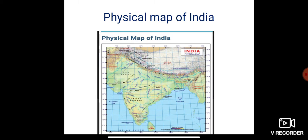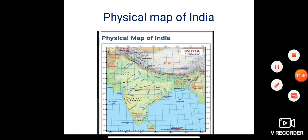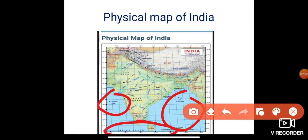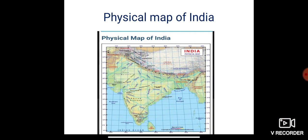India is surrounded by sea and ocean — the Bay of Bengal, Arabian Sea, and Indian Ocean. India is surrounded by sea and ocean from three sides.